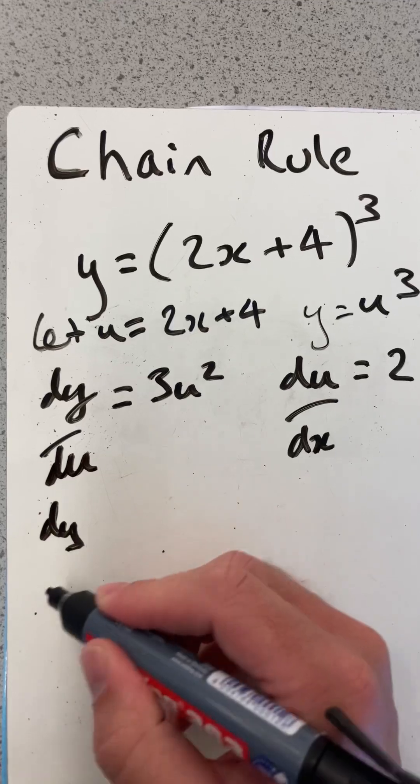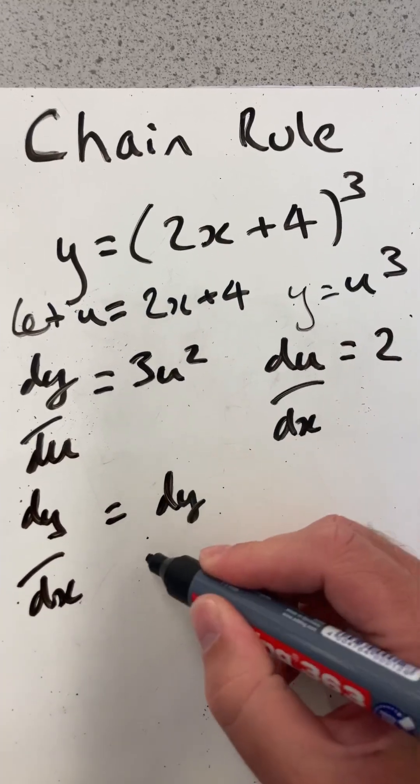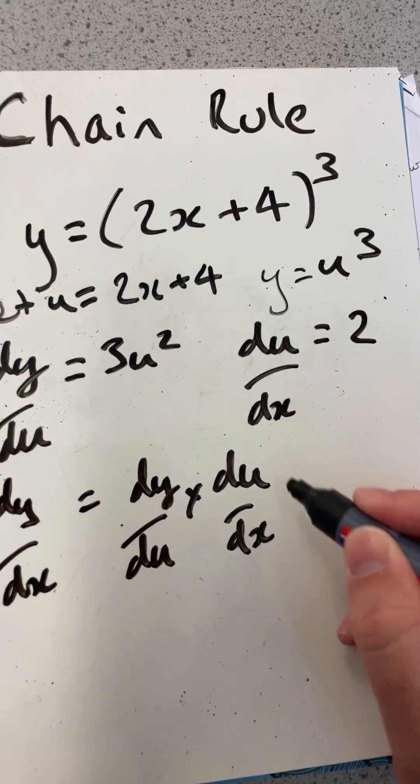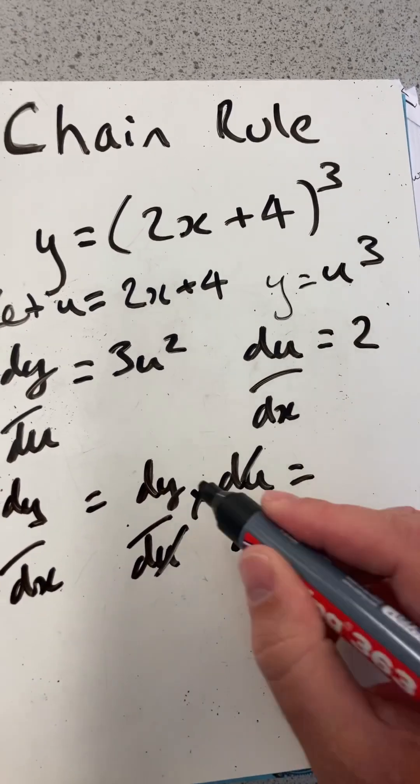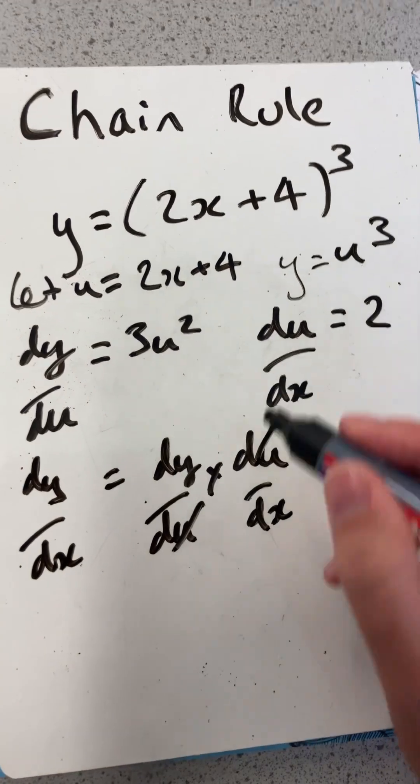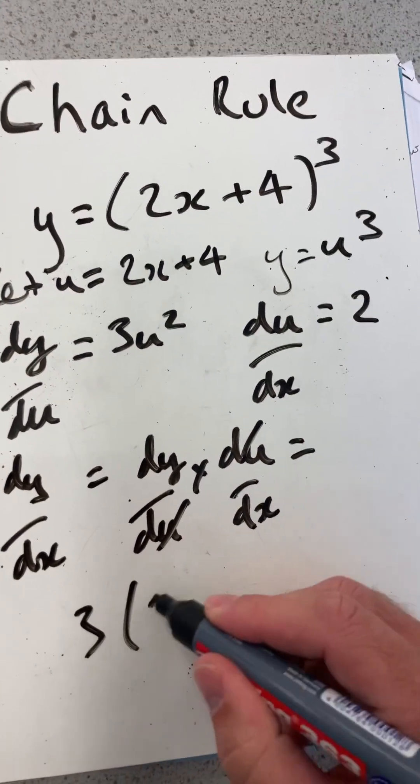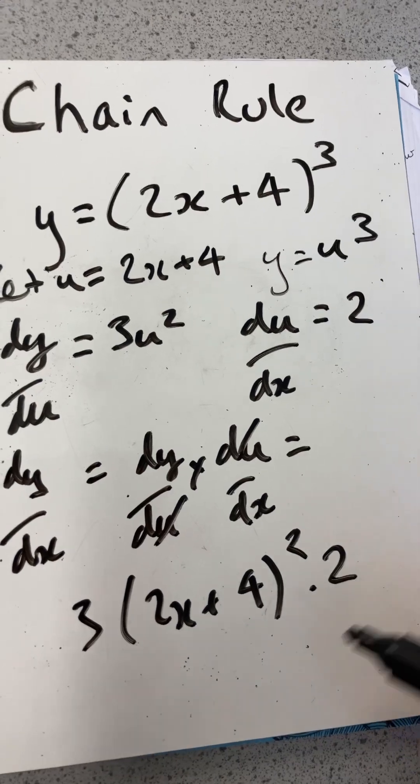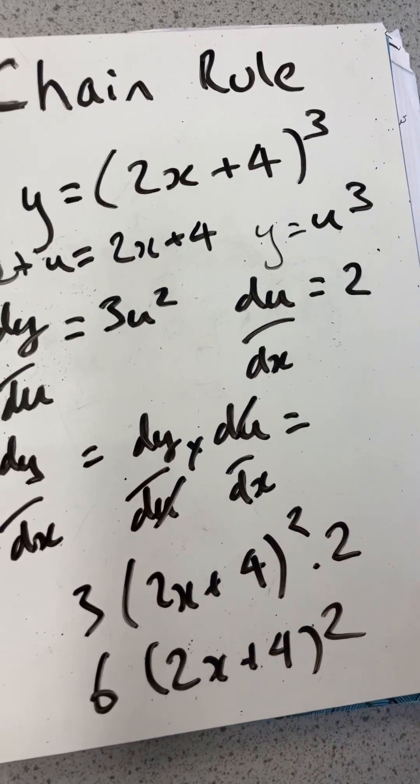Now I want dy/dx and by the product of these two, the du's will cancel and will be left with dy/dx as long as I multiply 3 with the original u squared times 2, which will be 6, 2x plus 4 all squared.